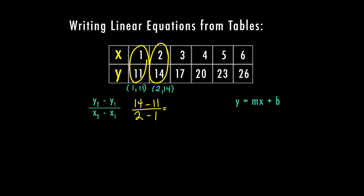So now I'm just subtracting. 14 minus 11 is 3, 2 minus 1 is 1. So my slope is 3. Now I need to use my formula over here and plug that in. So I don't know my b, so I'm going to go ahead and use an x and a y. And I'll just go ahead and use this first one. So my y is 11, that equals slope times 1 plus b.